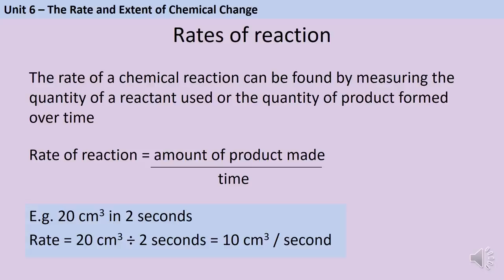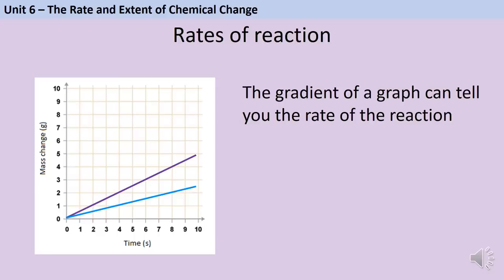For example, if a reaction produces 20 cm³ of gas in two seconds, then 20 divided by 2 gives a rate of 10 cm³ per second. Even if you forget the formula, the units tell you the calculation — 'per' means divided by, so centimetres cubed per second means take centimetres cubed and divide by seconds.